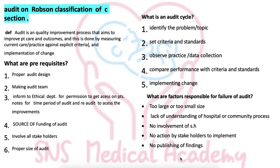What is an audit cycle? This comprises five steps: identify the problem or topic, set the criteria and standards, observe practice by data collection, compare our performance with criteria and standards from national or international guidelines, and implementation of the changes.